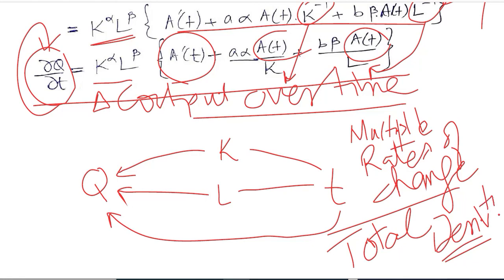And then we have to sum them up and use the total derivative. So this is how the total derivative can be applied to a dynamic production function. Thank you.